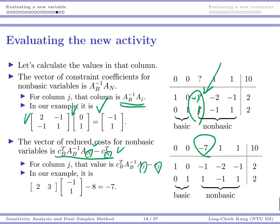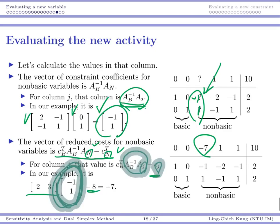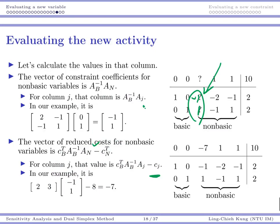And then for the reduced cost, it's going to be c_B transpose A_B inverse A_j minus c_j. So I'm going to focus on column j instead of all the columns. All I need to do is c_B transpose A_B inverse A_j, which is something you just calculated, minus your c_j which is eight. That's how you get your negative seven.